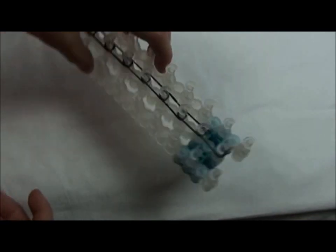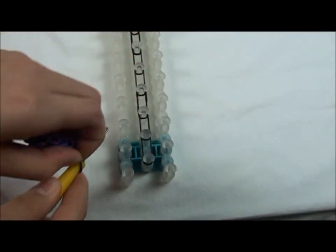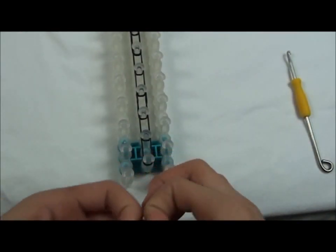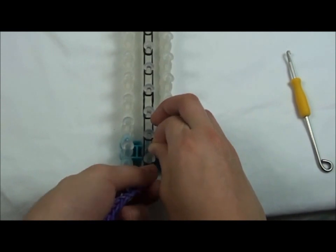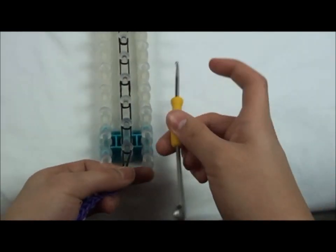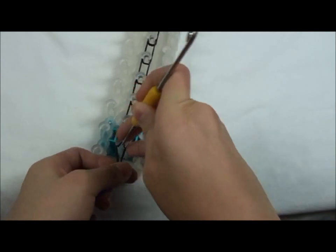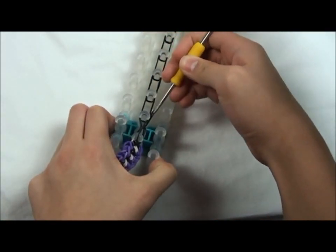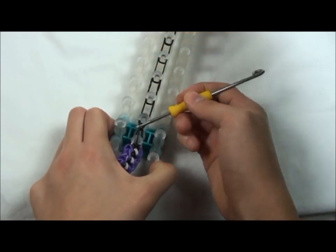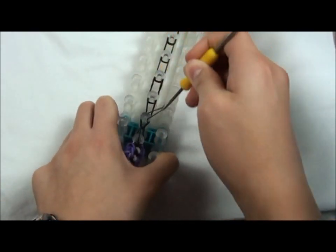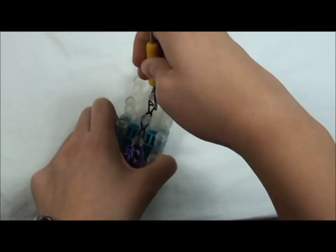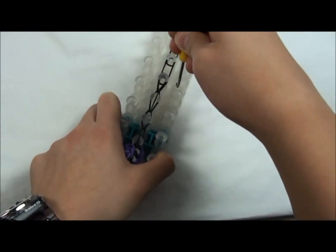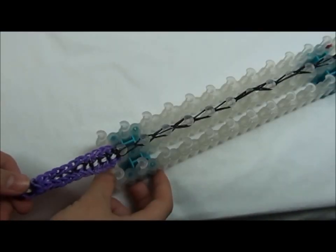Now flip it over. And using the bracelet, on the last pin, stick the rubber band on and hook it. Do this until the end. This is how it should look like when you're done.